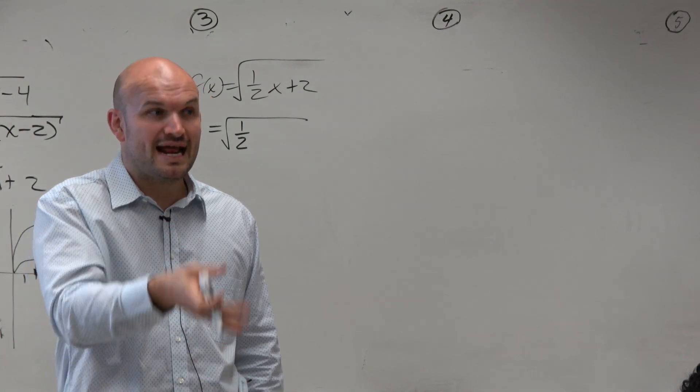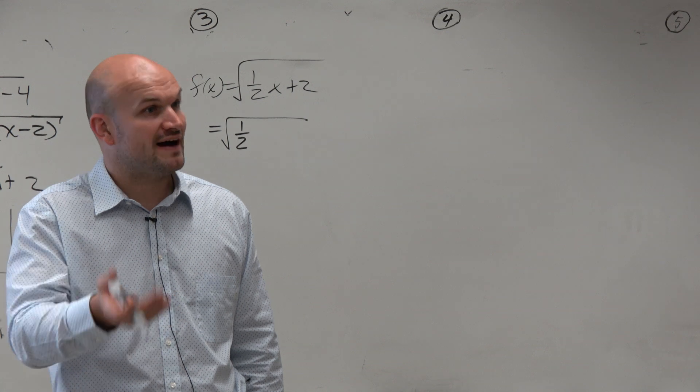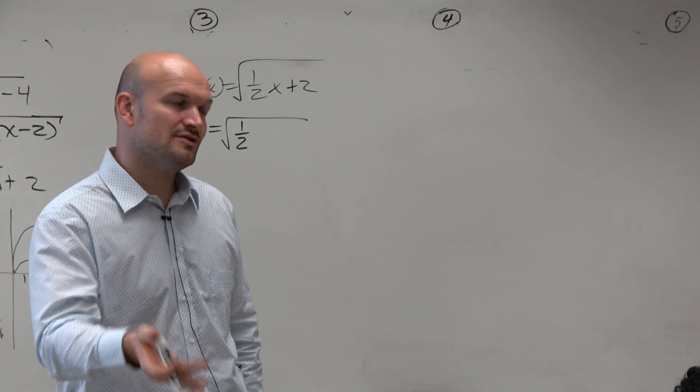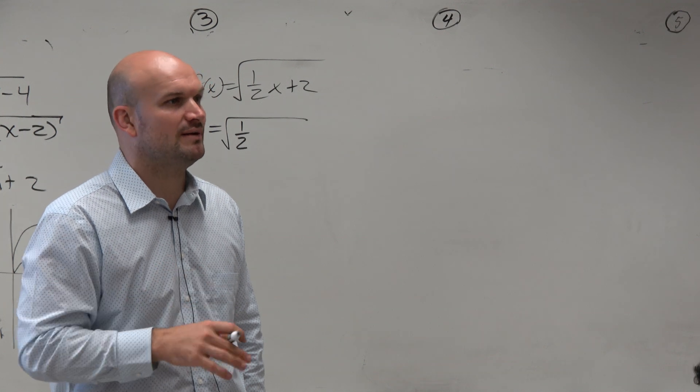When you're factoring out a 1 1/2, you're basically dividing by 1 1/2. Dividing by a fraction is the same thing as multiplying by the reciprocal. So dividing by 1 1/2 is the same thing as multiplying by?